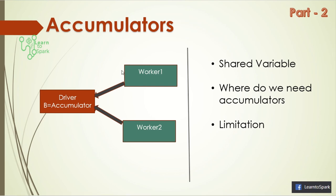Another limitation: accumulators should be used in actions and you should avoid using them in transformations. If you use them in transformations and a worker node fails and is re-triggered on another node, or if speculative execution is enabled where the same task runs on another node, there may be duplicate aggregation in the accumulator that you can't avoid. But when used in an action, even if there are failures, Spark handles it internally and will not duplicate entries in the accumulator. So use accumulators in actions for best results.